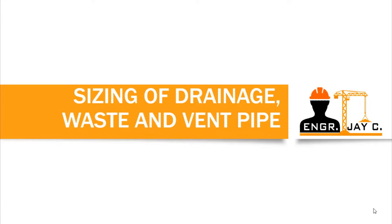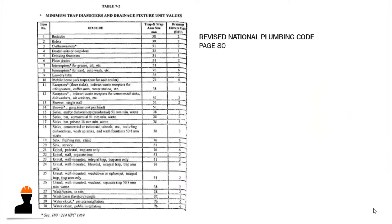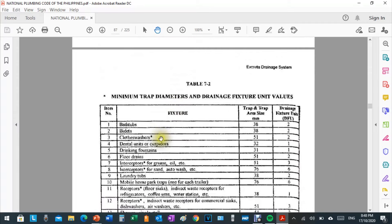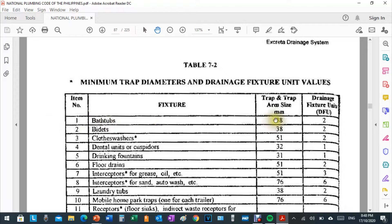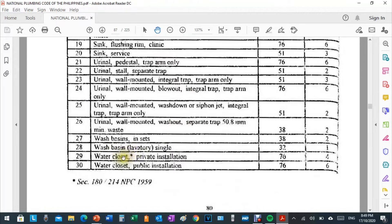In identifying the size of your pipe, the first thing you need to do is compute the total drainage fixture unit by referring to Table 7-2 of the Revised National Plumbing Code, found on page 80. This table lists fixture types, their required minimum trap arm diameter, and their equivalent drainage fixture unit. For example, bathtubs have a minimum trap arm of 38 millimeters and a drainage fixture unit of 2. Water closets for private installation require a minimum 76 millimeter trap arm.